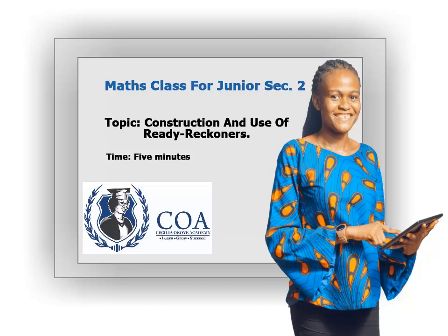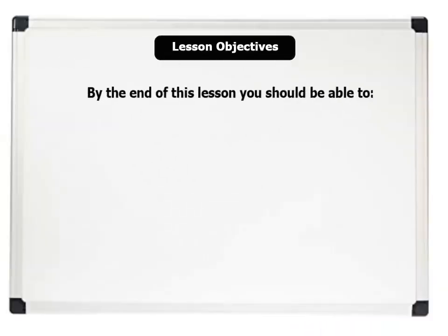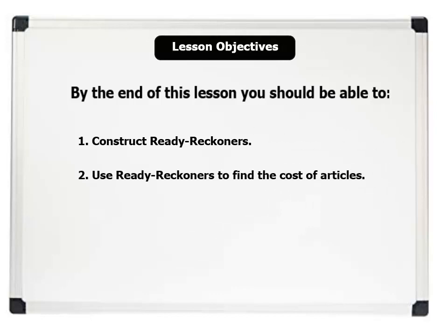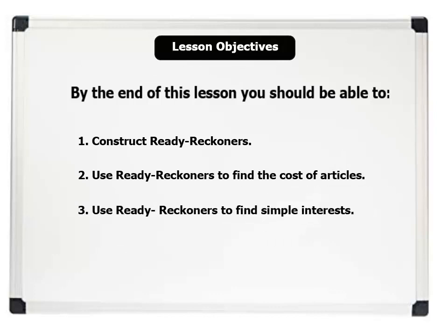Let's see our lesson objectives. By the end of this lesson, you should be able to: 1. Construct Ready Reckoners. 2. Use Ready Reckoners to find the cost of articles. 3. Use Ready Reckoners to find simple interests. Let us now discuss Ready Reckoners.